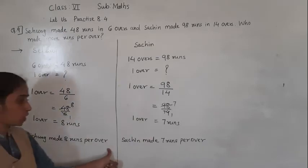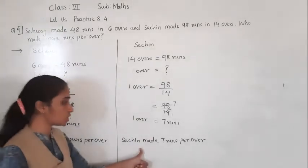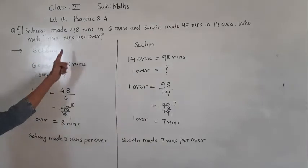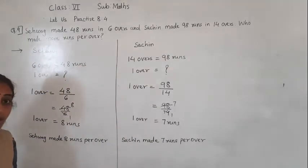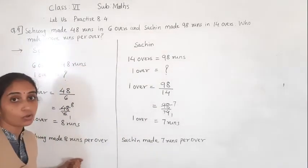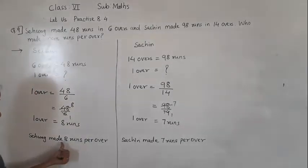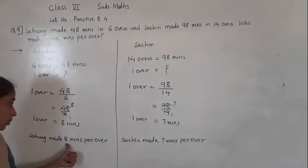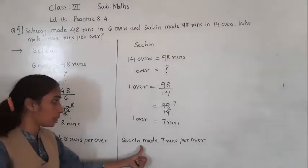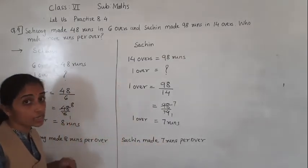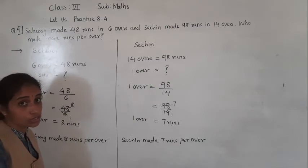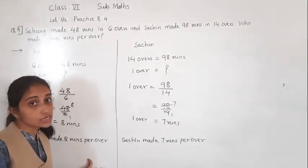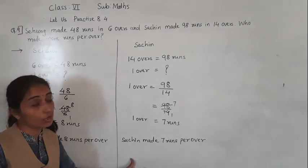Seva made 8 runs per over and Sachin made 7 runs per over. So who made more runs per over? Seva made more runs per over.